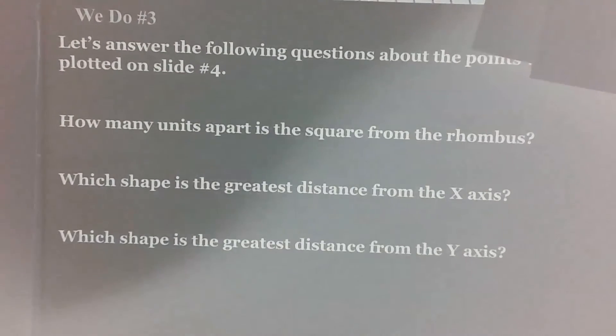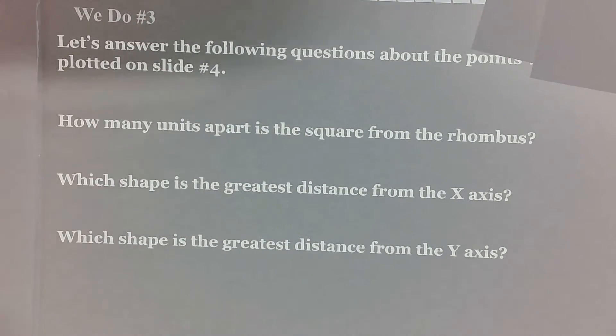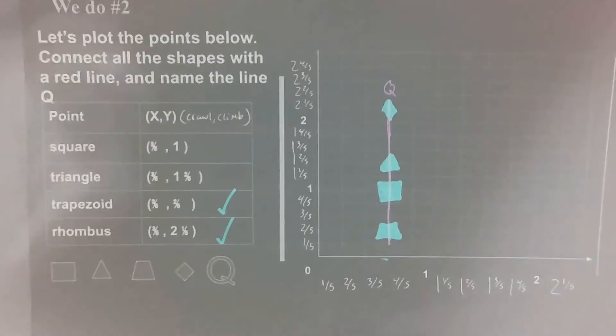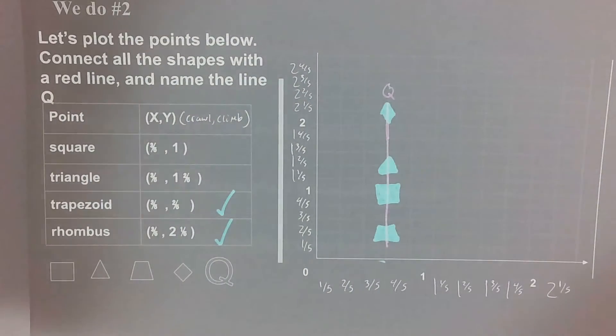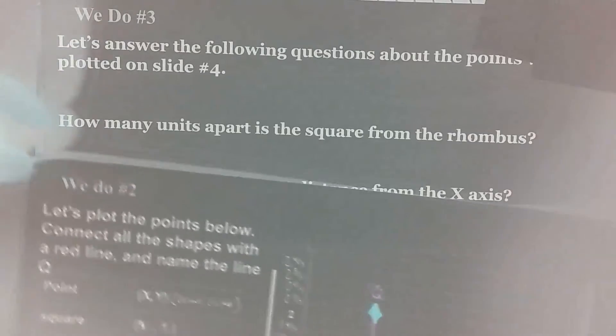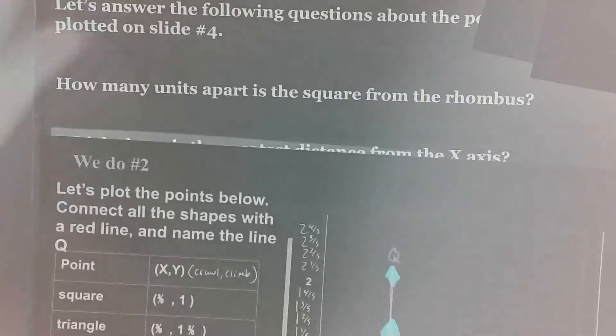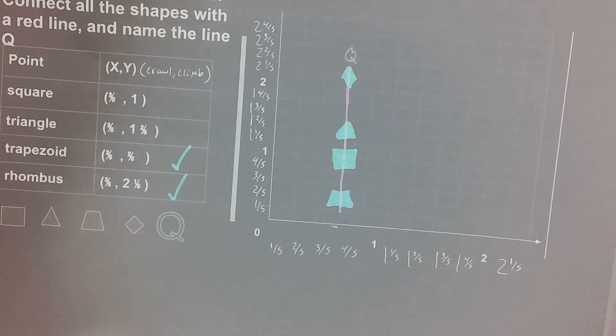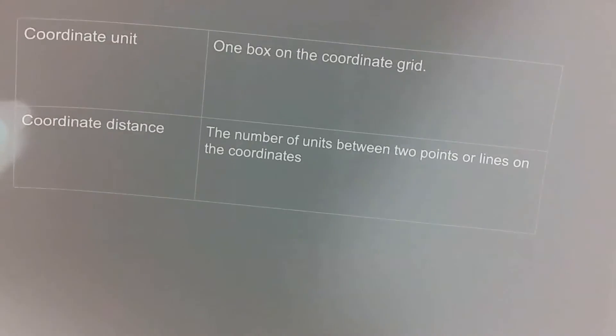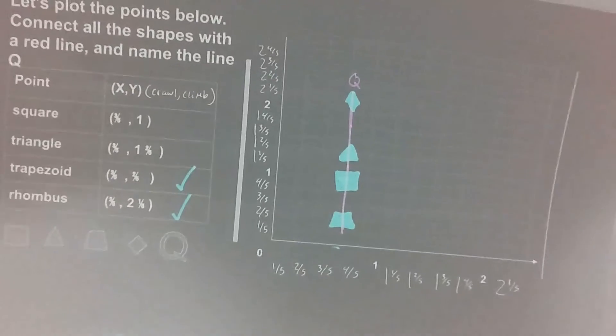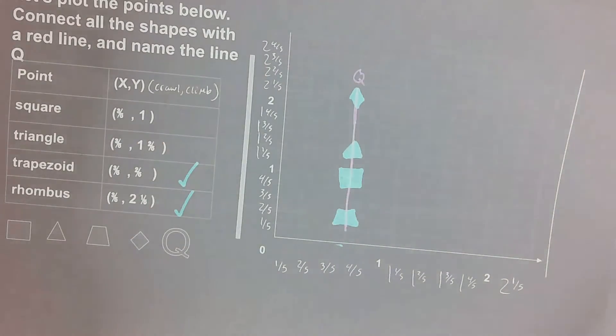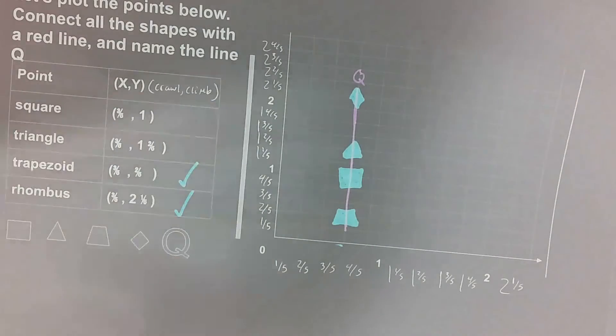We do number three asks us three questions about our graphing from We do number two. First question asks, how many units apart is the square from the rhombus? Now remember, all of the units, if you remember our definition, a coordinate unit is just one box on the coordinate grid. So even though these boxes are labeled as fifths, we may be tempted to think one box is worth one-fifth, but one box is just one unit.